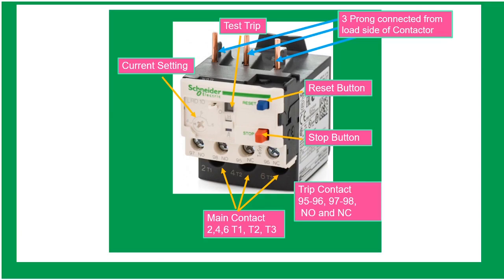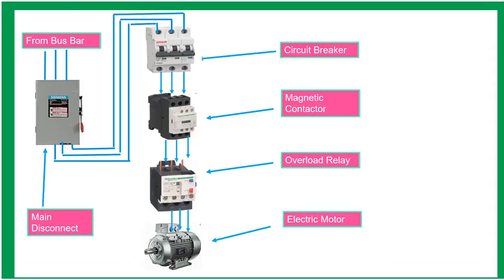The reset button manually resets the system after the motor has tripped. This is the usual setup of motor control: from the bus bar going to the main disconnect, whose purpose is to shut off the entire circuit, then to the circuit breaker — designed to protect the electrical circuit from short circuits and ground faults. The contactor is an electrically controlled switch for switching higher current, and the overload relay protects the motor from prolonged overcurrent. The electric motor converts electrical energy to mechanical energy.